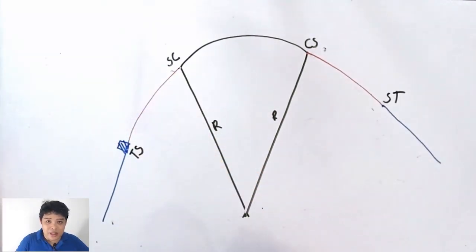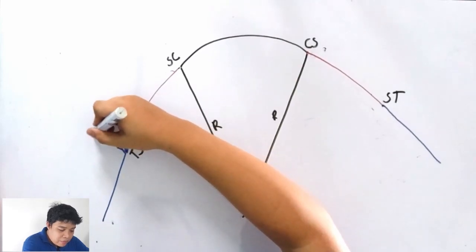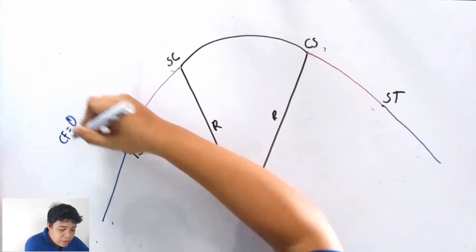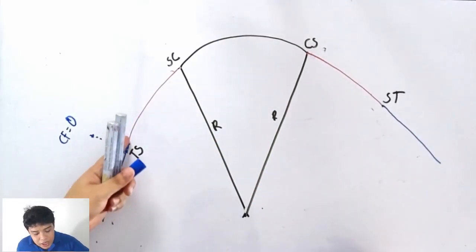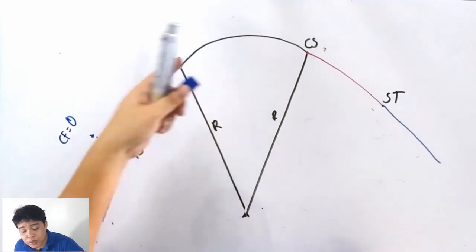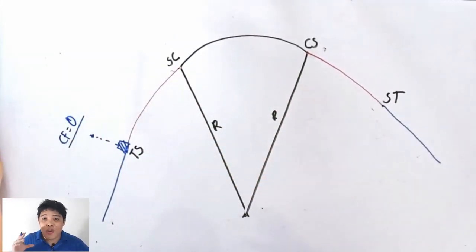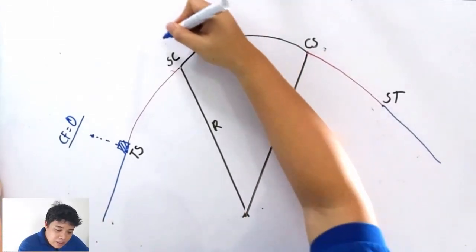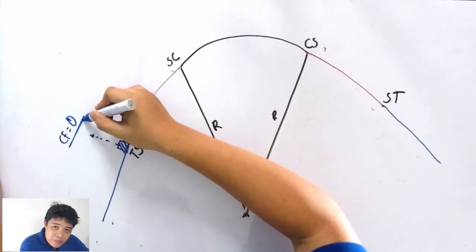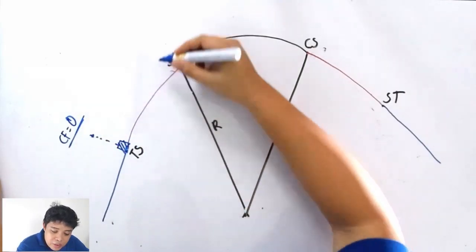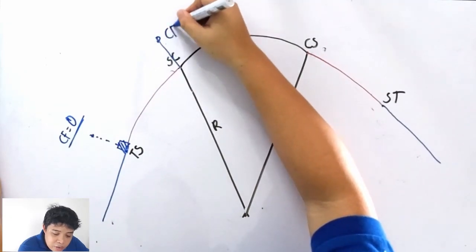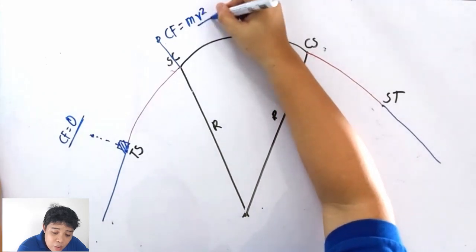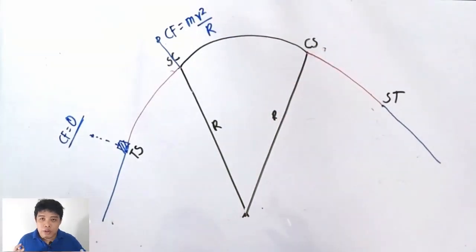Your vehicle is on TS. The value of centrifugal force here should first be equal to zero. As the vehicle moves toward the curve, the centrifugal force constantly increases — it should change uniformly and linearly, from zero increasing linearly to the full value of centrifugal force, which is mv² over r.